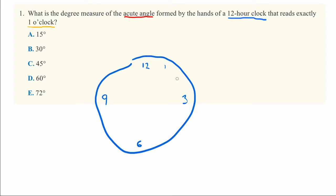And then there's a 1 and a 2, and I won't draw them all out, but there's also a 4, 5, 7, 8, 10, and 11. And that's the way this clock ought to look.